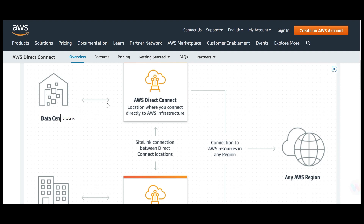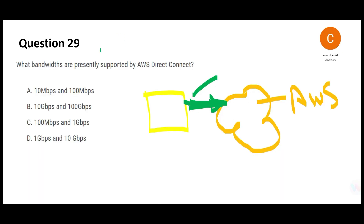Looking at the answer options: the first option is in Mbps — this is wrong. Nowadays everything is supported in Gbps. Among the Gbps options, option B is wrong because Direct Connect does not go from 10 Gbps to 100 Gbps. The moment you see Mbps, just mark it wrong.